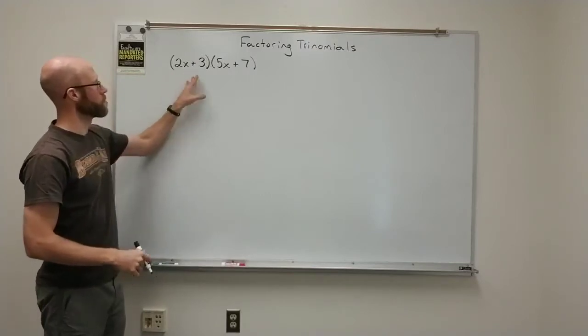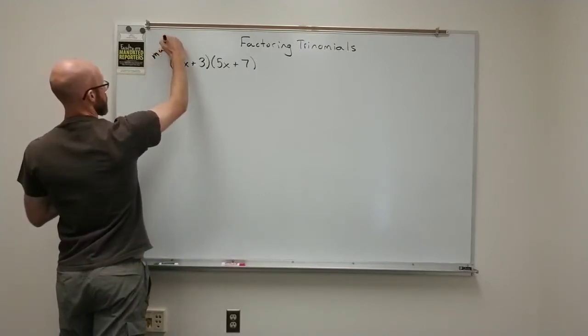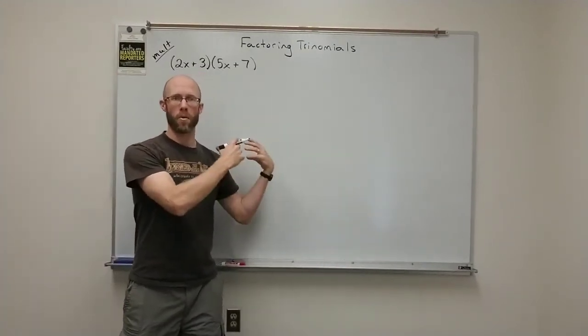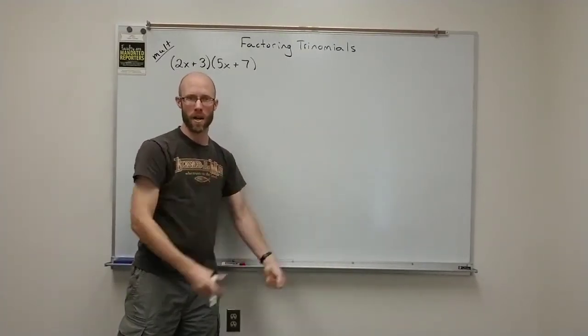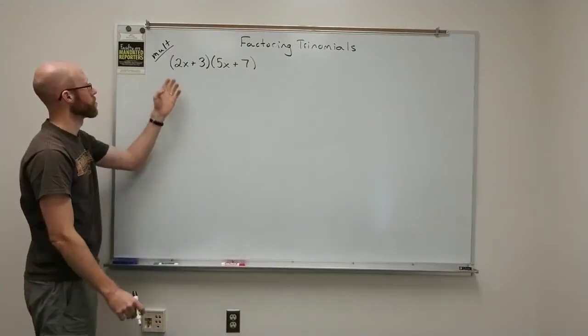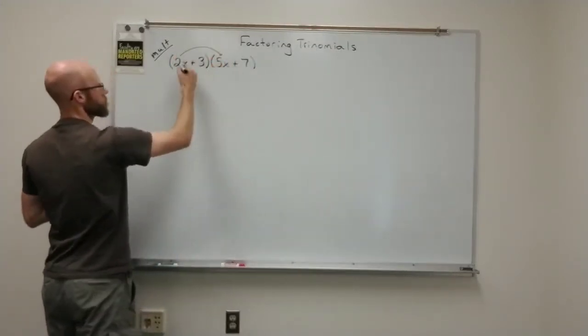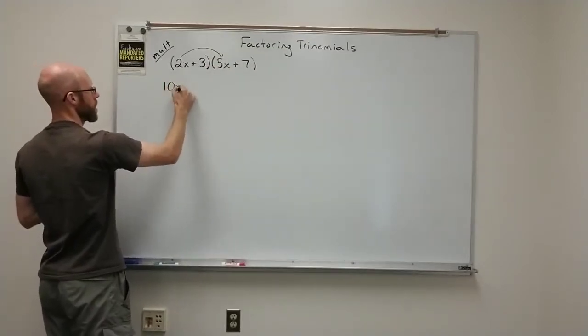So if I were to multiply this again, I'm going to start by multiplying, not factoring, and then at the end we'll apply the patterns we see to the factoring process. So in multiplication here, we're going to have 2x times 5x is 10x².